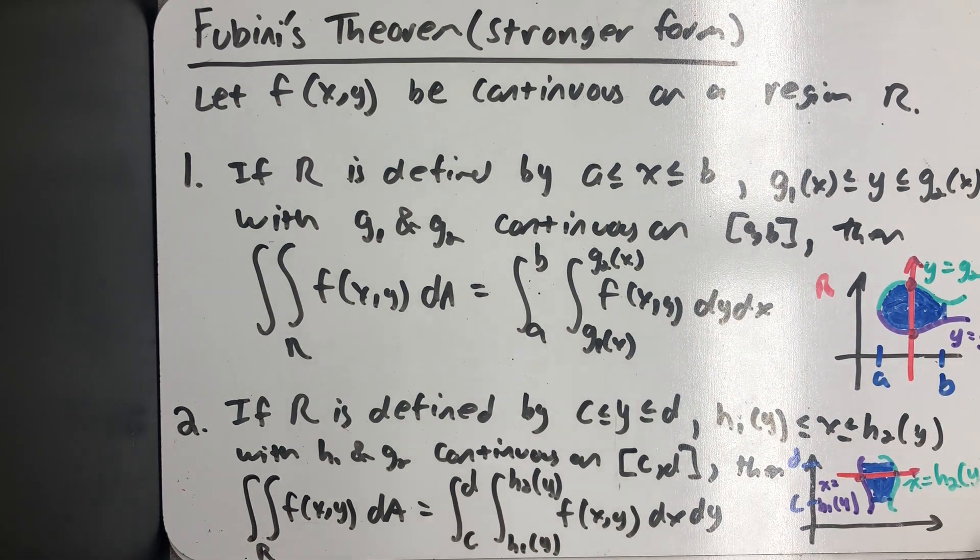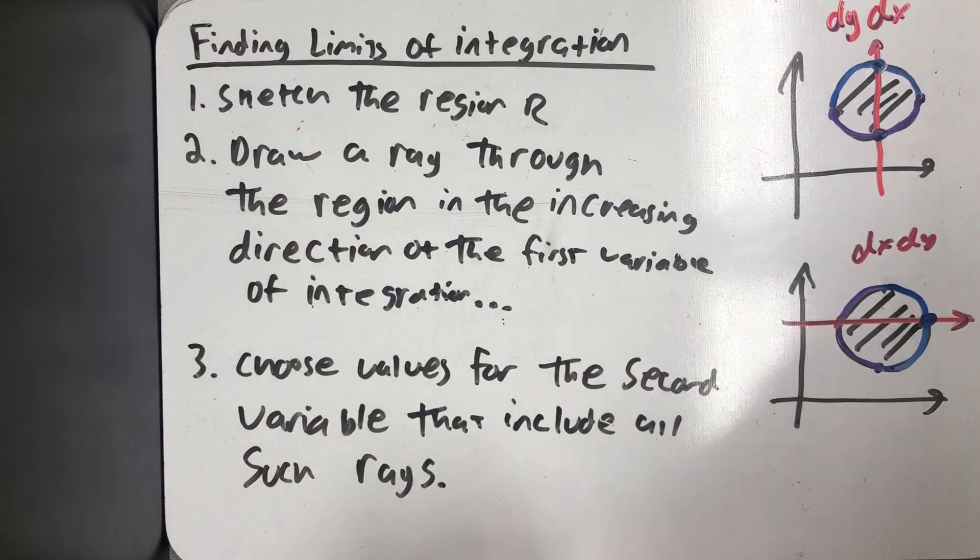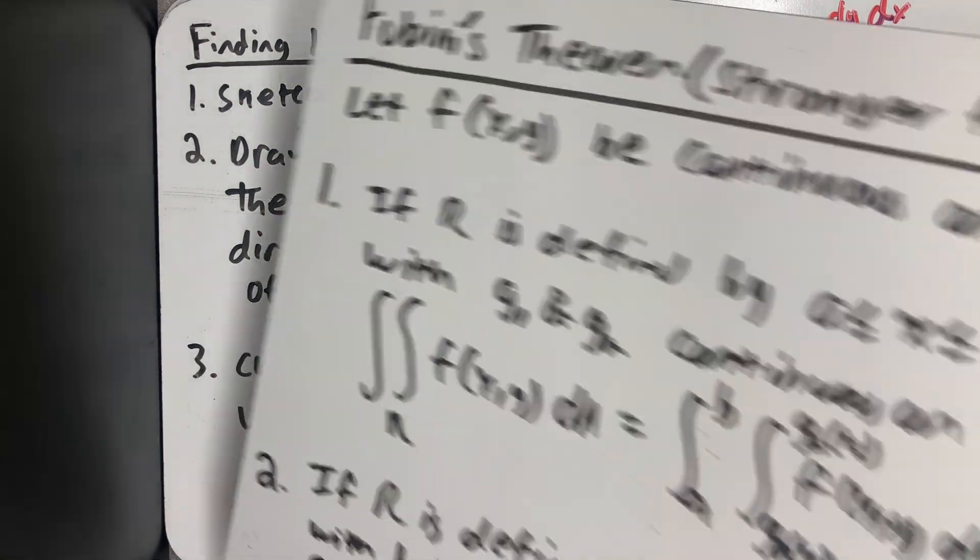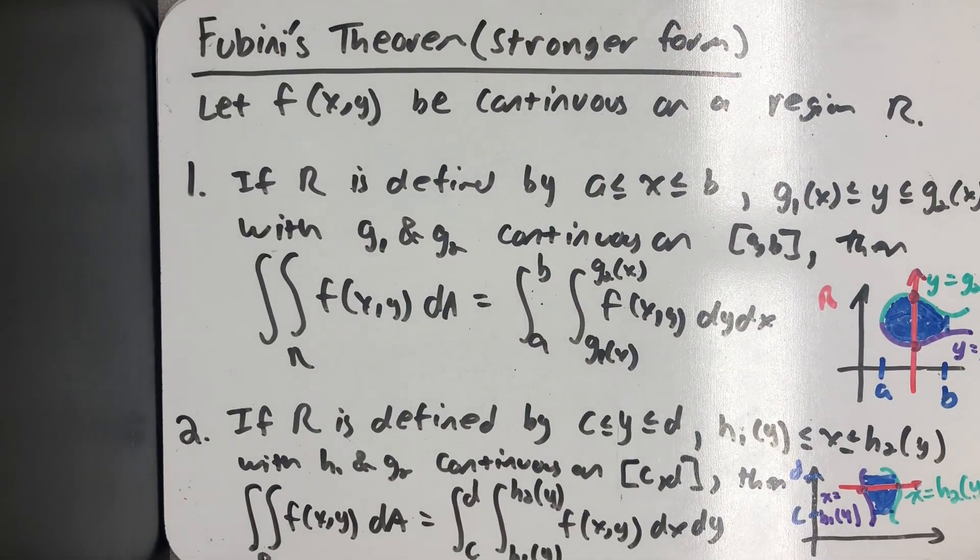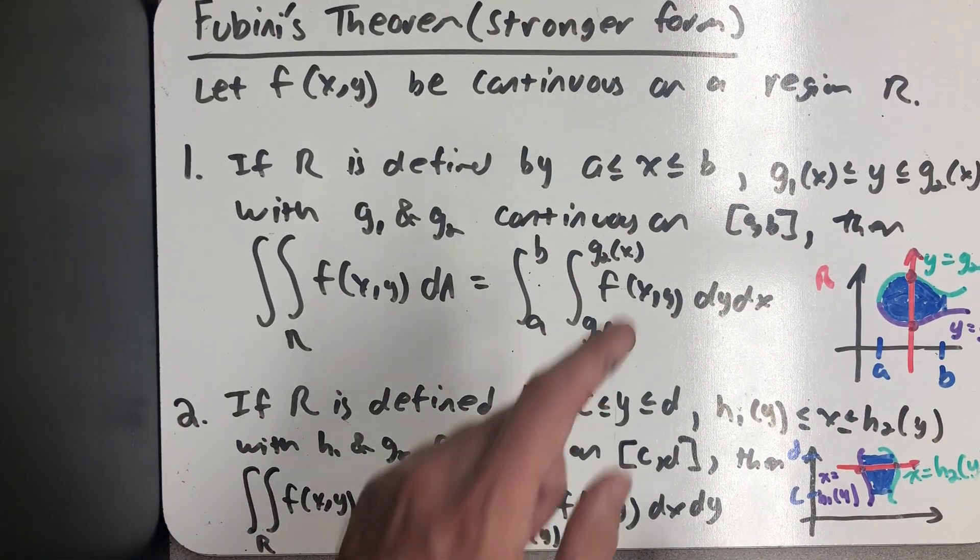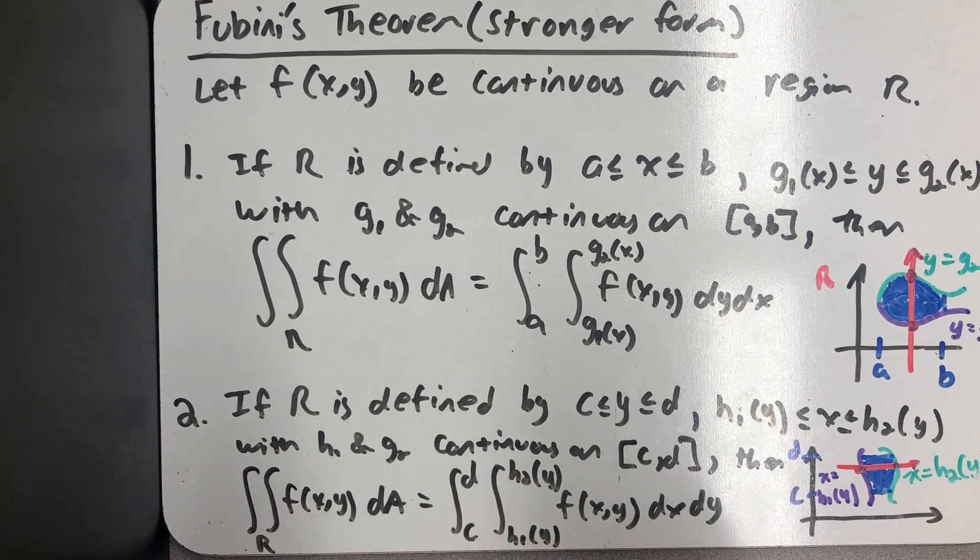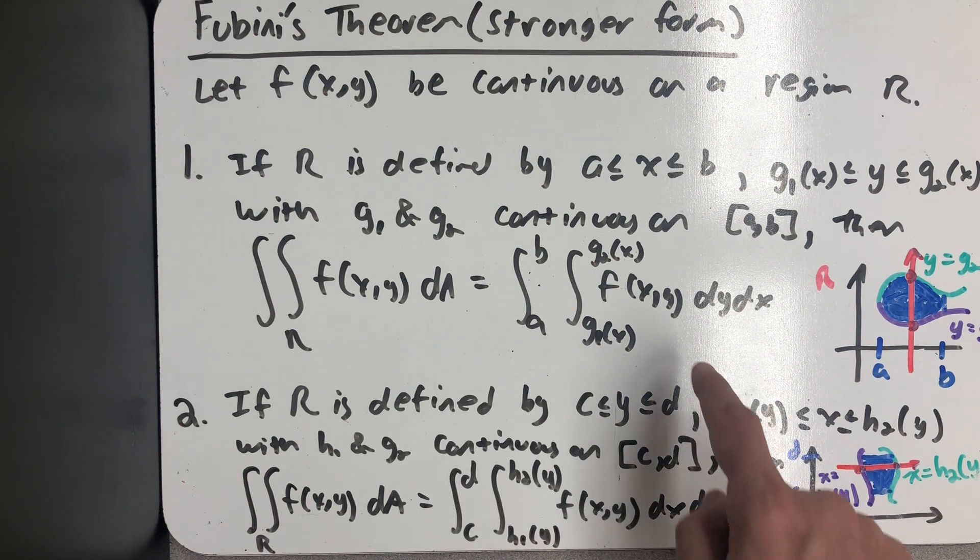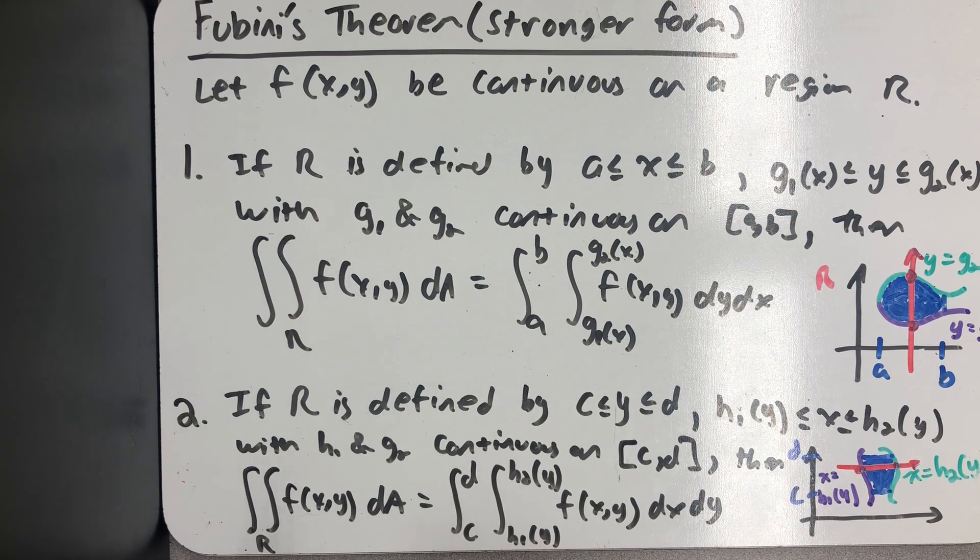Some regions, like the ones I drew here, could be described either way. In the example we're getting ready to do, it's going to be one of those where we could actually do it in either way. Though sometimes we will need to think about in which order the integration will be easier. And in one example we'll do in a different video, we'll have to think about in which order the integration is even possible.